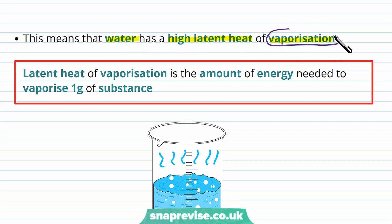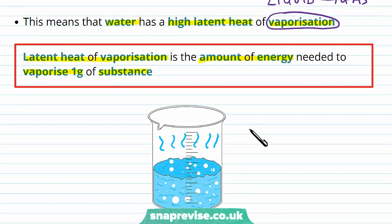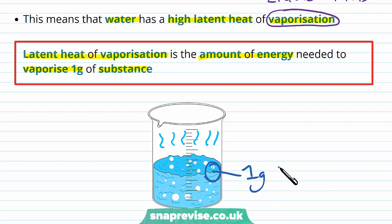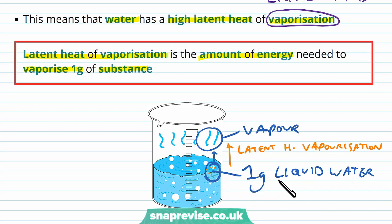Vaporization means turning a liquid into a gas, and this can be done in two ways: by evaporation or by boiling. Both come under the heading of vaporization because it's becoming a vapor. Latent heat of vaporization is the amount of energy needed to vaporize one gram of a substance — essentially the energy to turn one gram of liquid water into vapor. This is different from specific heat capacity, which is about raising the temperature of water by one degree; here we're talking about the energy to break hydrogen bonds and turn one gram of liquid into vapor.